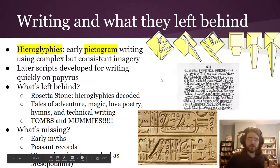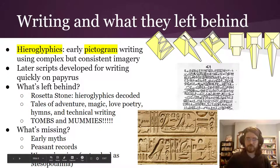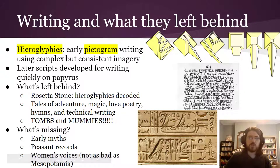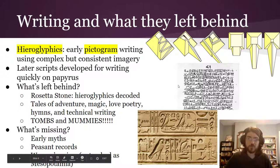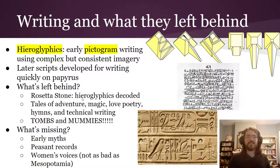We know this because we found a stone — the Rosetta Stone — that had ancient Egyptian hieroglyphics, their script, and Greek, which we already knew how to translate. That allowed us to translate all the way back. So one of the reasons we know so much about Egypt is because we can translate all of their writing. What we found was a really rich literary history — tales of adventure, magic, love poetry, hymns, and some very specific technical writing. They also left behind lots of tombs and mummies, which got people very excited in the 1800s, leading to a lot of archaeological work, some of which is slightly questionable.